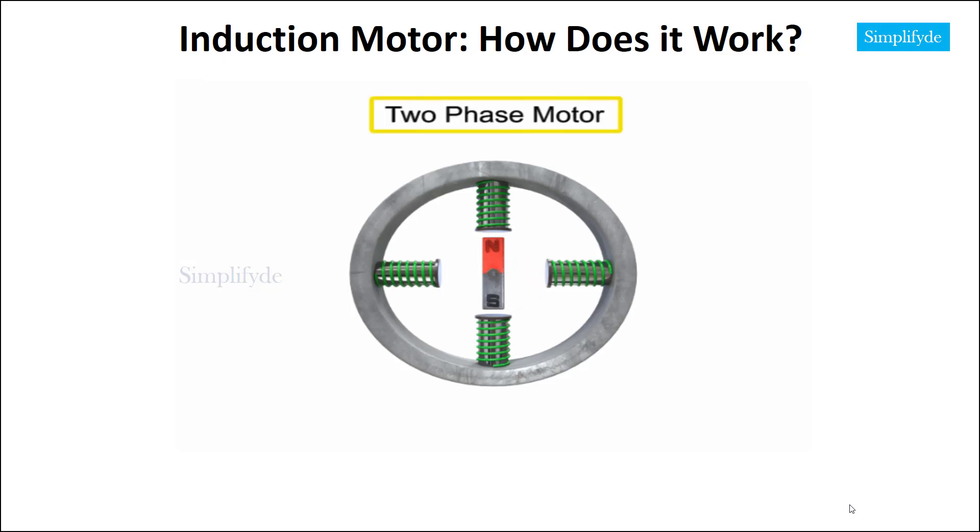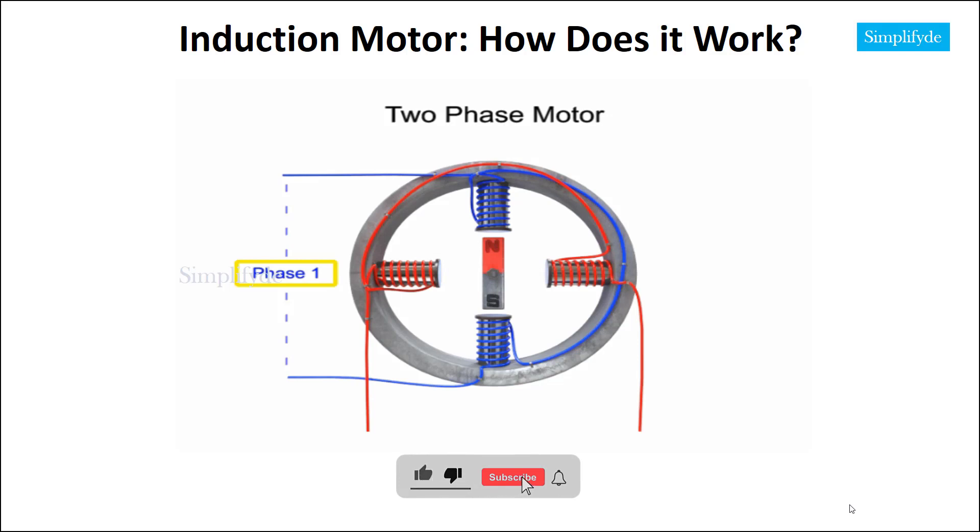This illustration of a two-phase motor has a pair of stators connected to one sinusoidal AC input, referred to as phase 1, and a pair of stators connected to a second sinusoidal AC input, referred to as phase 2.